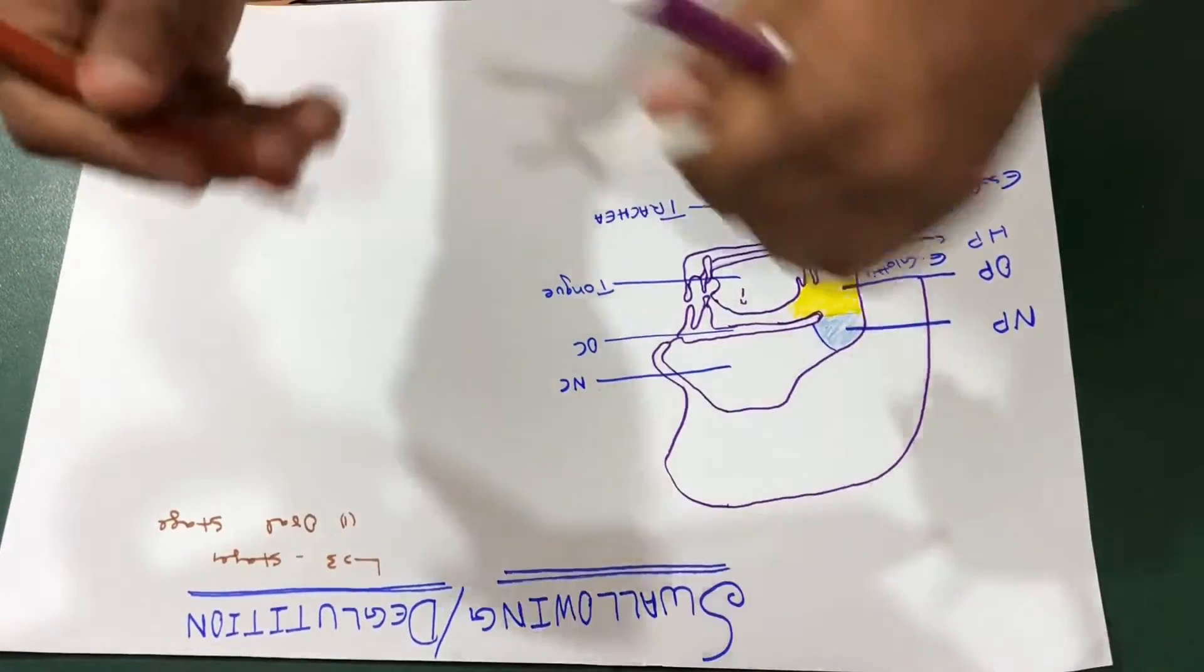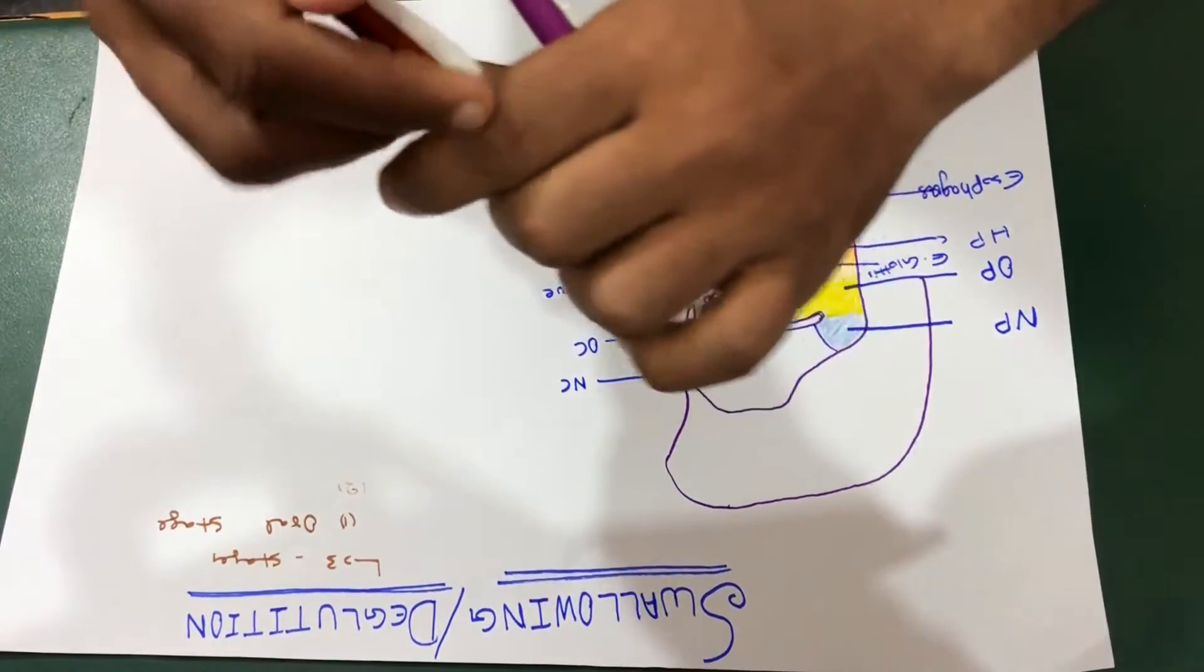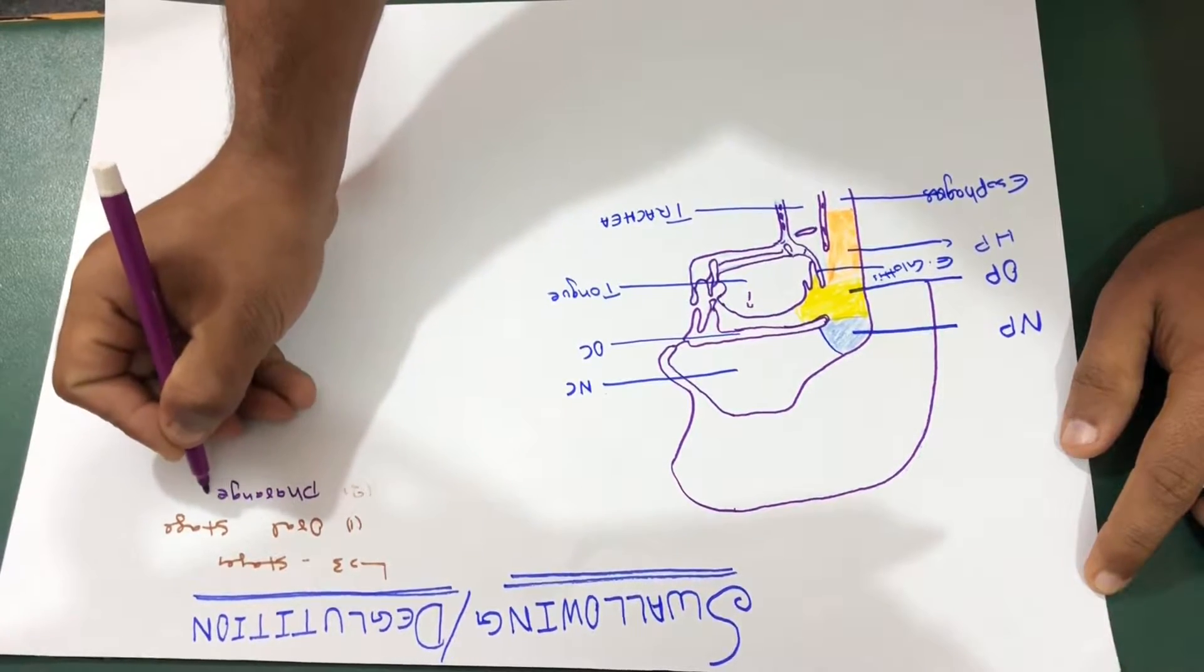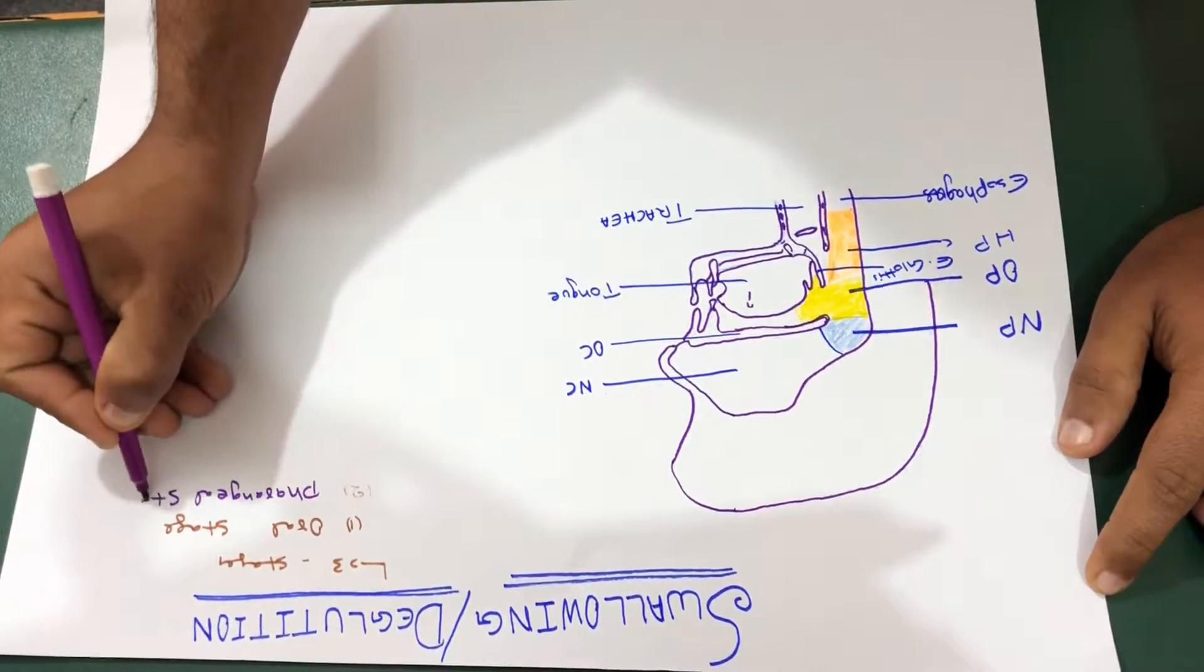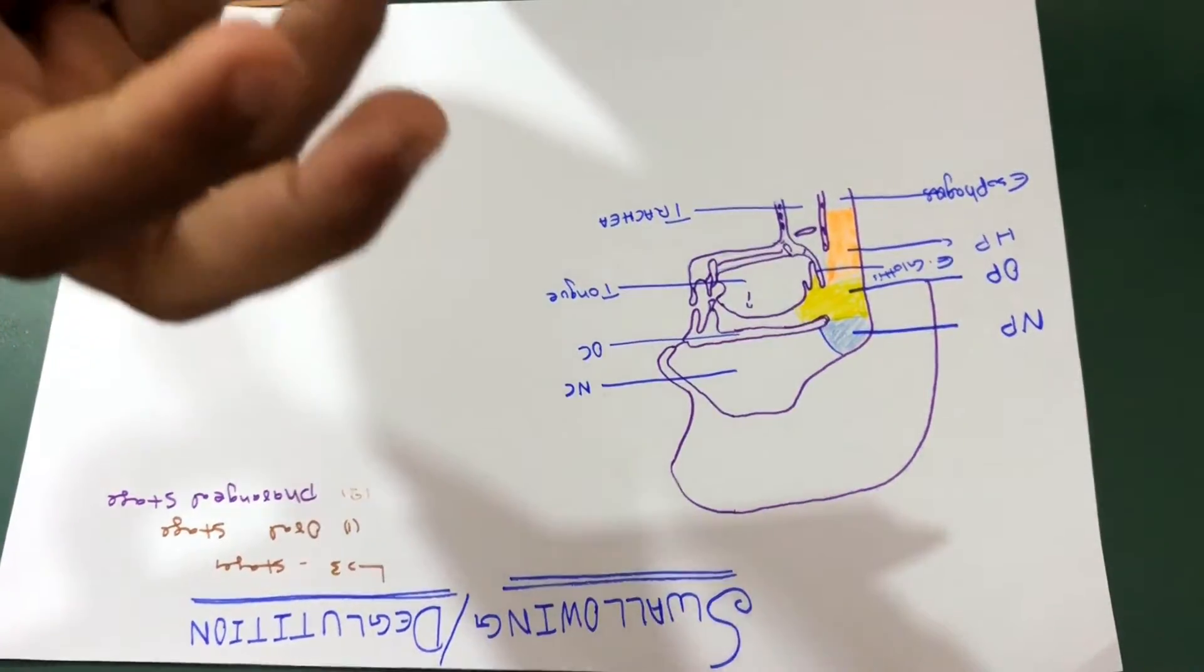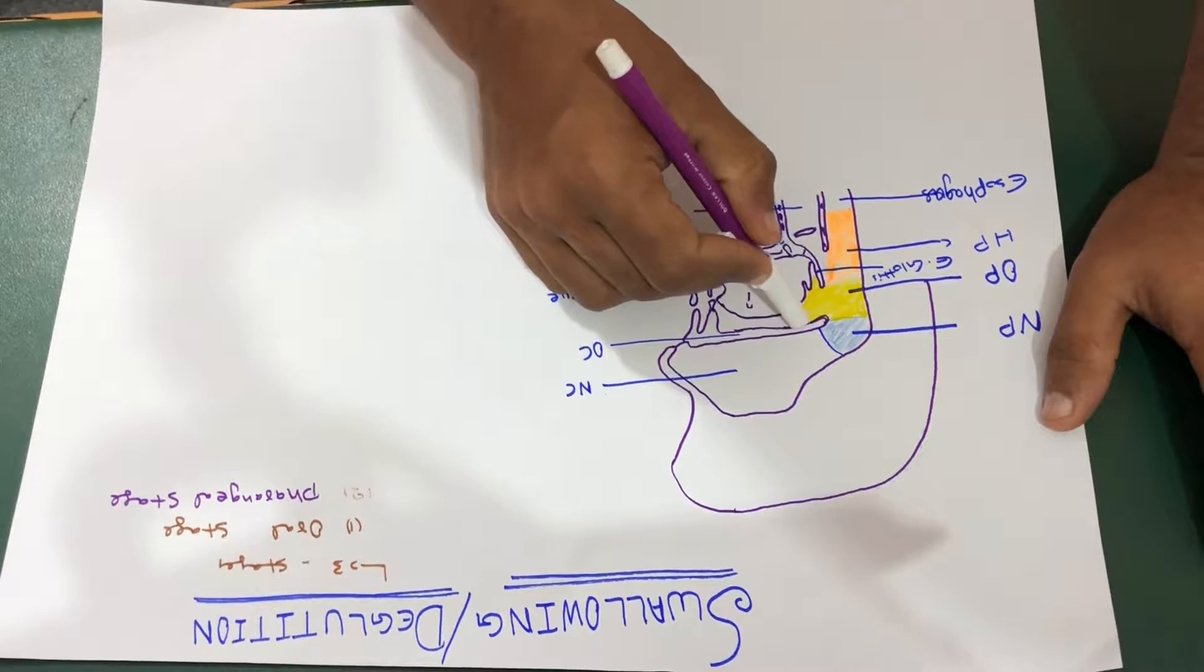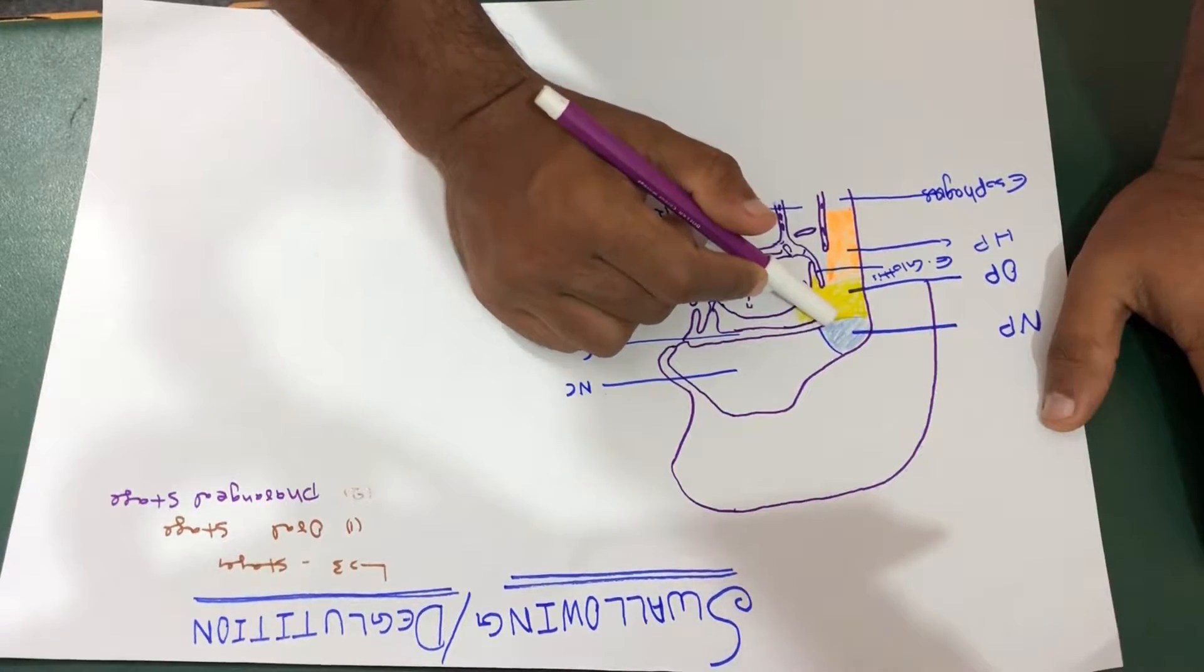The second stage which is a little bit lengthy or in detail is called your pharyngeal stage. So what happens in your pharyngeal stage: as the bolus goes backward and hits the pharyngeal wall, the swallowing receptor area that is posteriorly on the pharyngeal walls are stimulated.